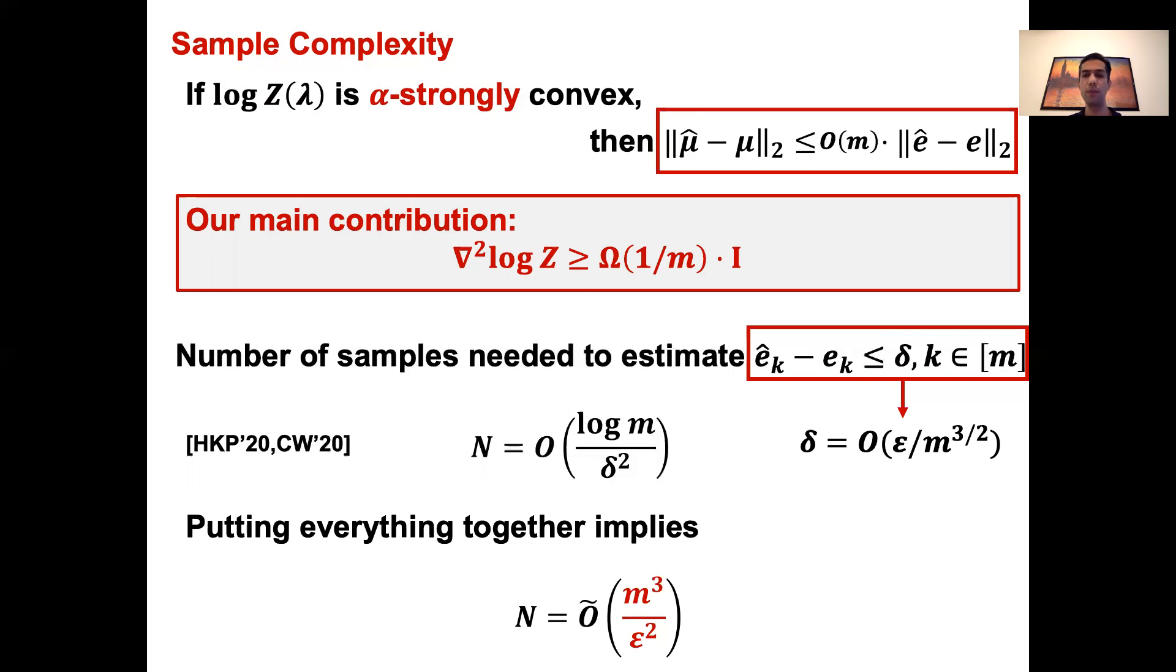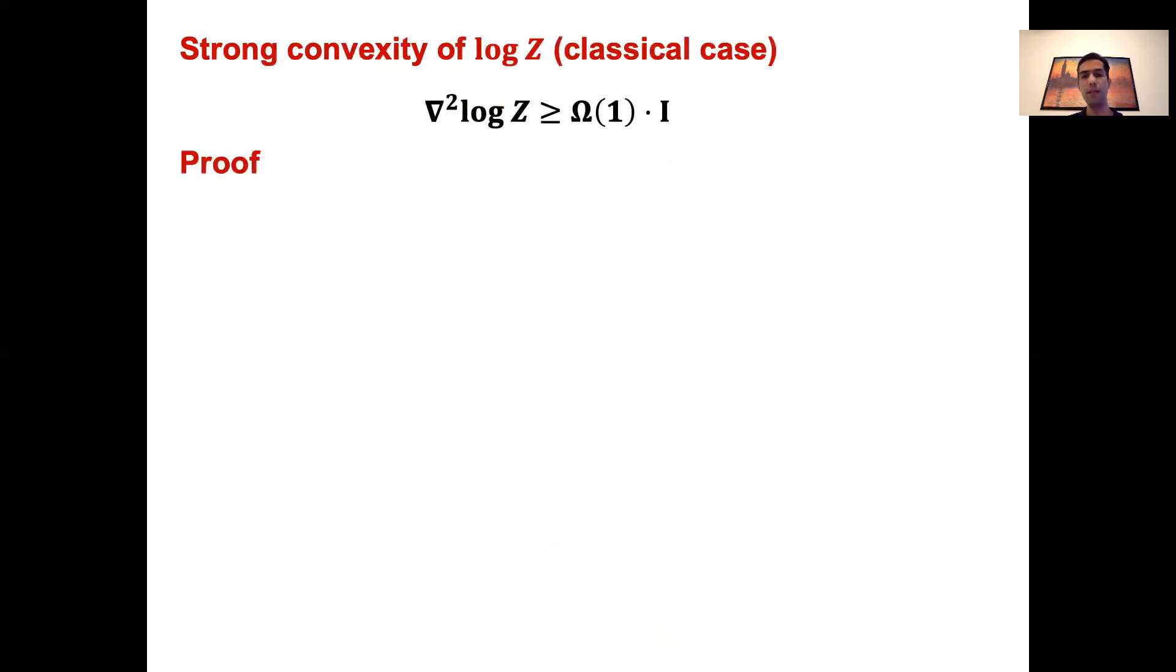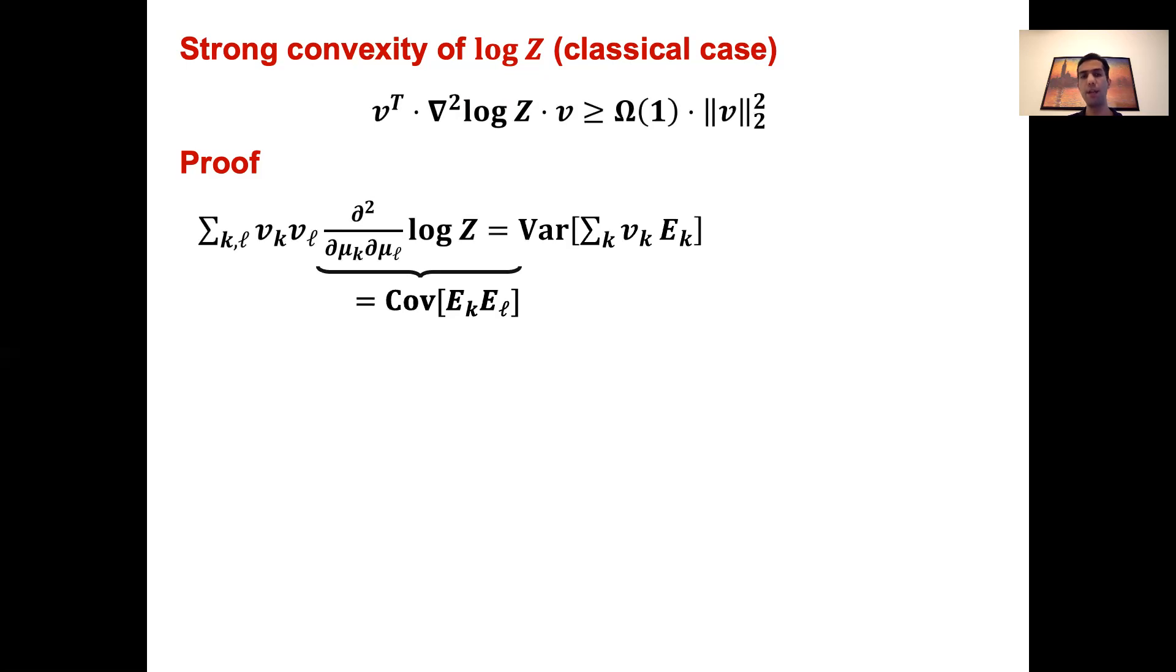All right, now let's see how the proof of the strong convexity works. I think it's insightful to begin with the case that the Hamiltonian is classical. For instance, it could be the Ising model. In this case, actually a better strong convexity bound can be proven. Instead of order 1 over M, the alpha parameter is just a constant. Proving this is equivalent to proving that for all real vectors v, this inequality holds. The entries of the Hessian are just the second order derivatives, and they're just equal to the covariance of the local operators we have. The overall sum, then, is just the variance of an operator that looks like a Hamiltonian with interaction coefficients given by the vector v.